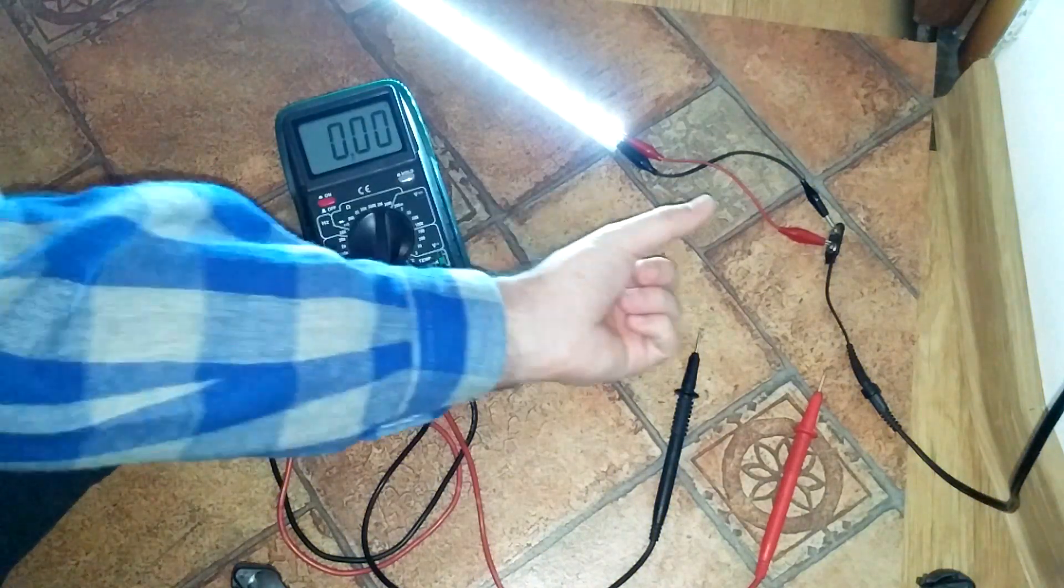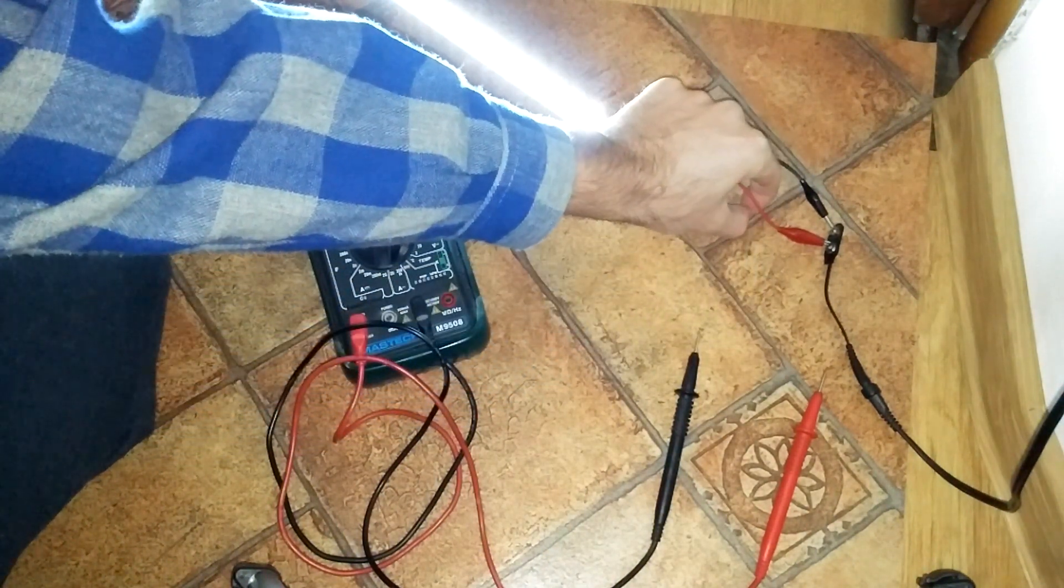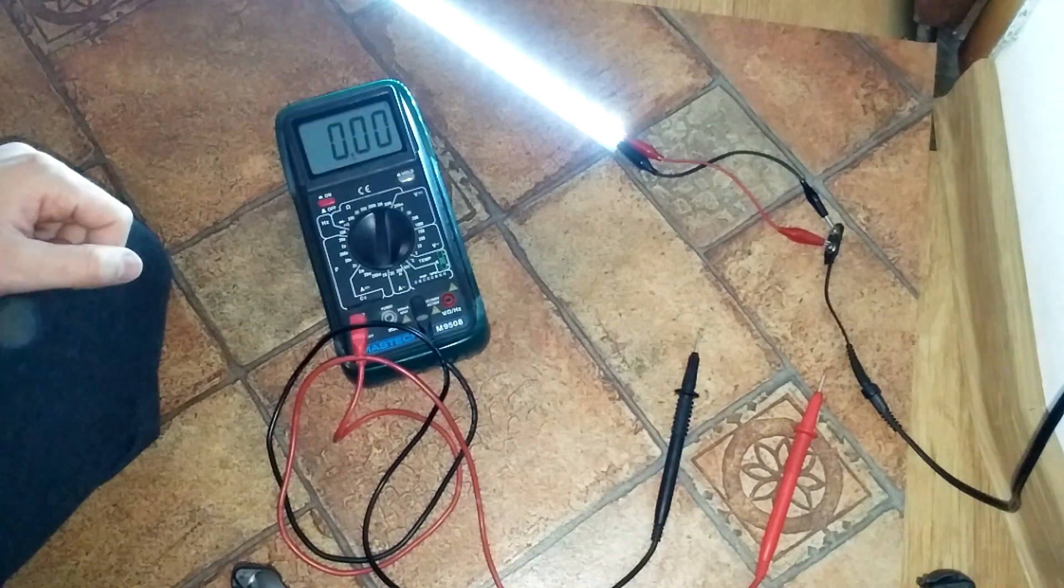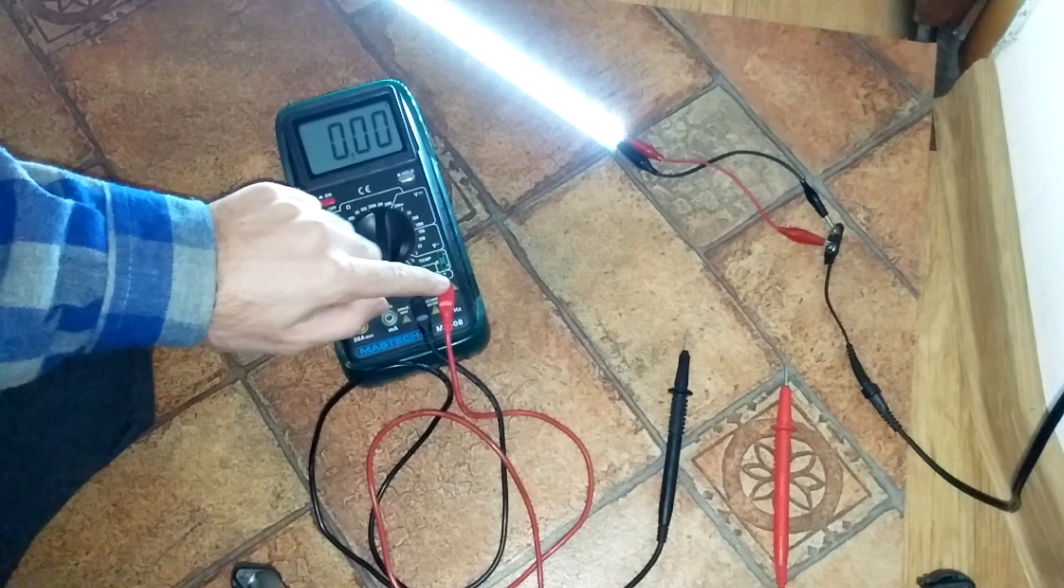That does not need for the circuit to be broken. The circuit can remain closed and in that case you just put the clamp around one wire and it will show a measurement. But these don't have the clamp and thus you have to break the circuit.